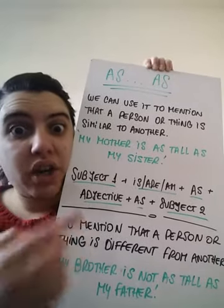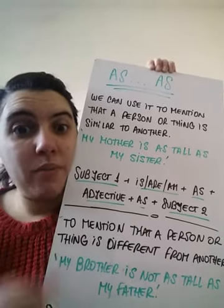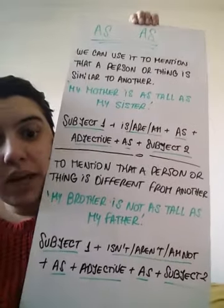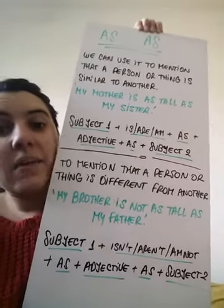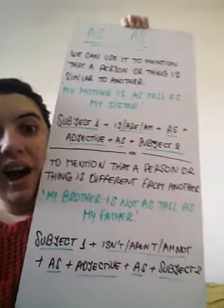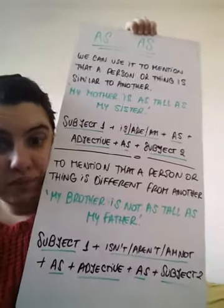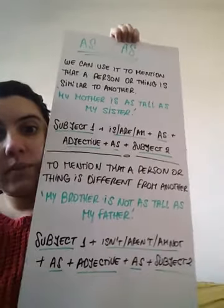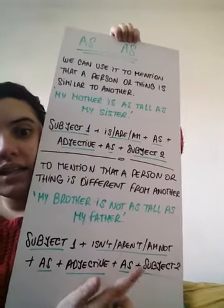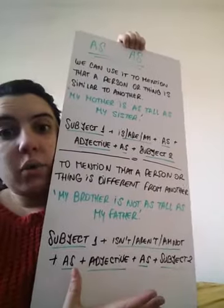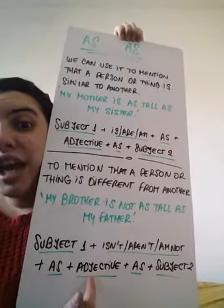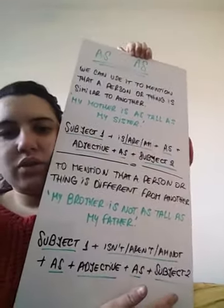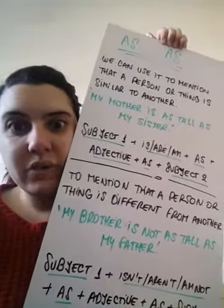The structure is similar — la estructura es muy similar. La diferencia es que el verb to be — 'is', 'are', or 'am' — se van a convertir en negatives: 'isn't', 'aren't', and 'I'm not'. So, first we write the first subject, the verb to be in negative — 'isn't', 'aren't', 'I'm not' — the word 'as', the adjective, and the other 'as', and last but not least, the second subject.